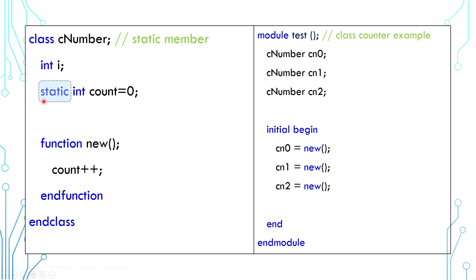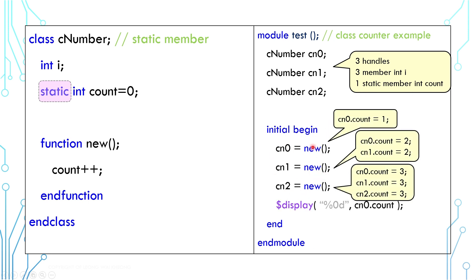Now, if we use the keyword static, it makes the member count being shared by all instances. There are three instances here and therefore three members id, but there's only one member count. Every time a handle is instantiated, the member count would increment.